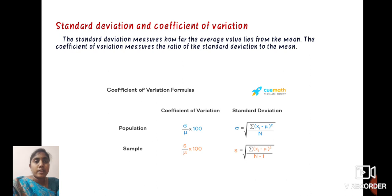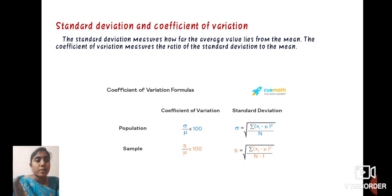Next, we define standard deviation and the coefficient of variation. The standard deviation measures how far the average value lies from the mean. The coefficient of variation measures the ratio of the standard deviation to the mean. For population, coefficient of variation equals sigma divided by mu into 100, and standard deviation sigma equals root of summation of (Xi minus mu) whole square divided by N. For a sample, coefficient of variation equals S divided by mu into 100, and standard deviation S equals root of summation of (Xi minus mu) whole square divided by N minus 1.